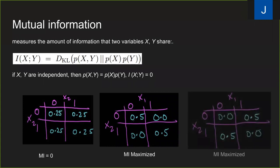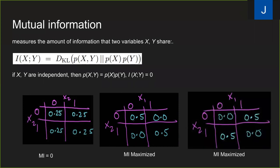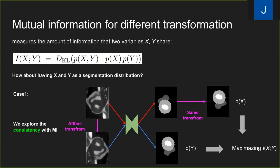It is worth noting that the assignment order of variables does not affect the mutual information. In this paper, we consider X and Y as two segmentation distributions and maximize the mutual information in two different ways. The first way is to consider X and Y as segmentation distributions under different transformations. Segmentation information must be conserved under different transformations.